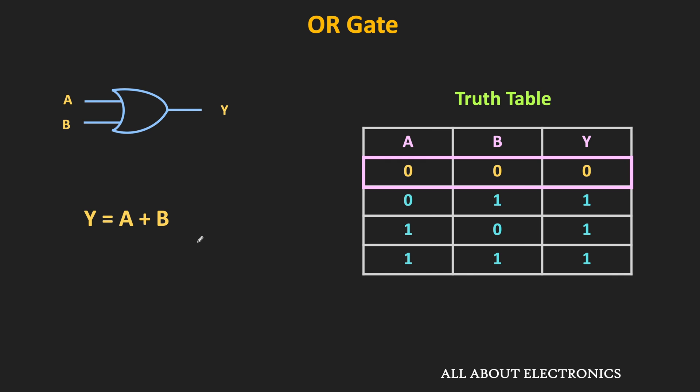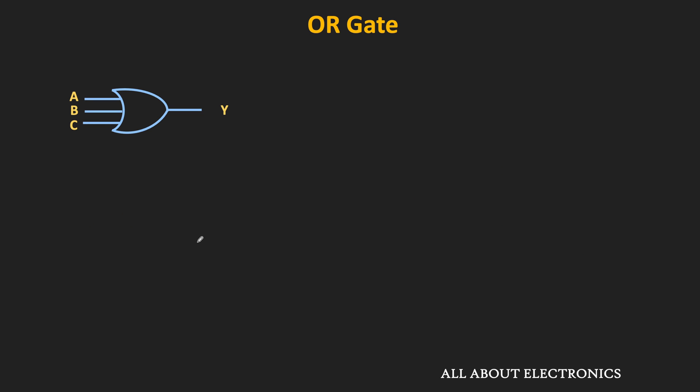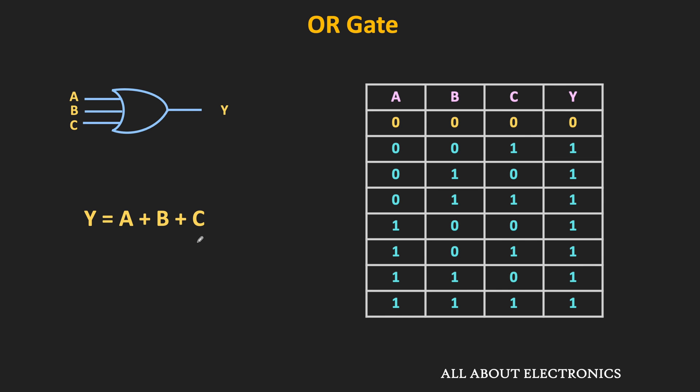Similarly, we can also have an OR gate with more than two inputs. Here is the symbol of the three-input OR gate, and its Boolean expression is A + B + C. This means if all three inputs are low, then and only then will the output be equal to low; in any other case the output will be equal to high.